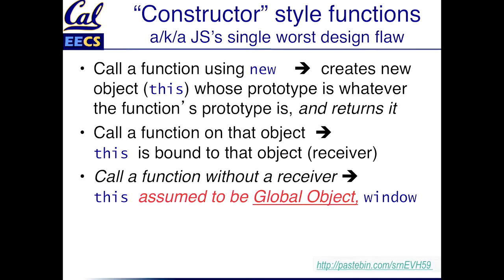If you call a function without the receiver, then the value of this — if it appears in the function — is assumed to refer to the global object. There is no good reason for this except that this has to point to something, and the only sensible fallback is the global object. This is terrible because it's legal to do and not what you want. When JavaScript is embedded in a web browser, the global object is an object representing the window or the document — so you're setting properties on the window. Almost never what you want.